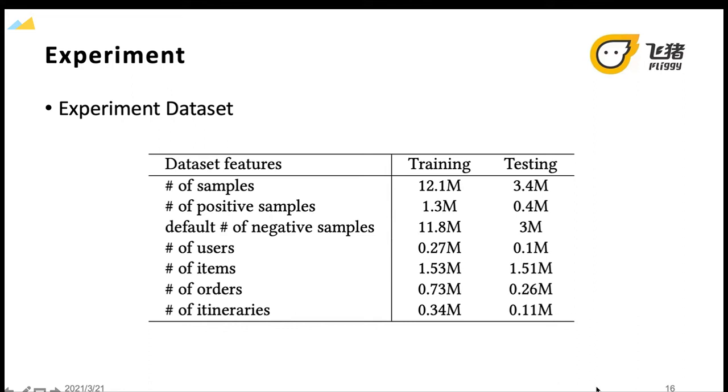In the dataset, impression and click samples are labeled as positive samples. On the premise that the number of positive samples is constant, we test the impact of different settings for the amount of negative samples on the performance of FitNet in the following experimental results.